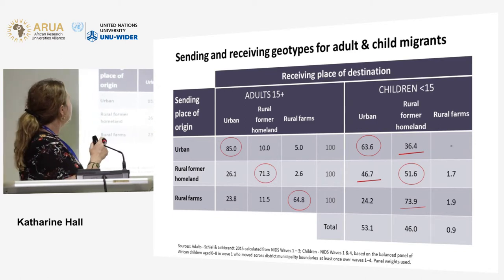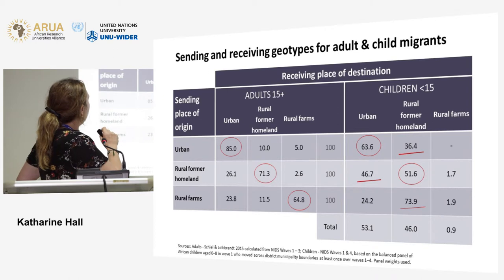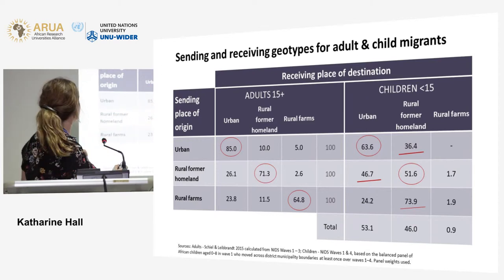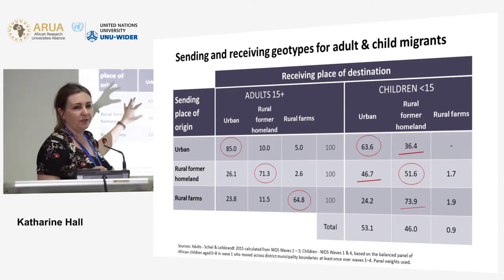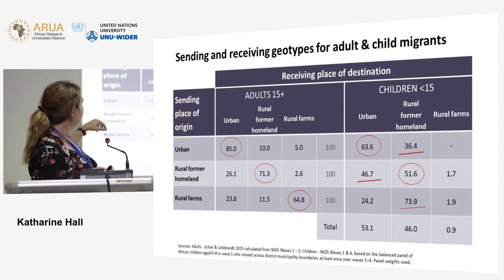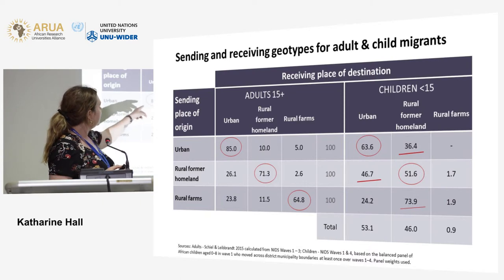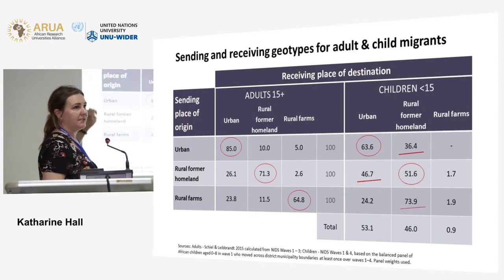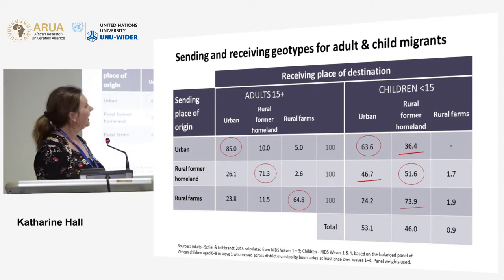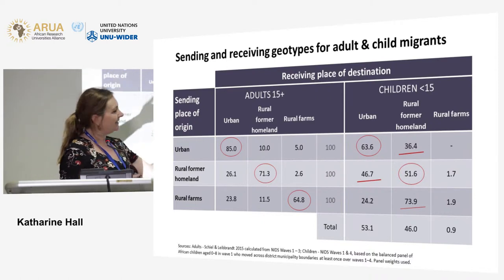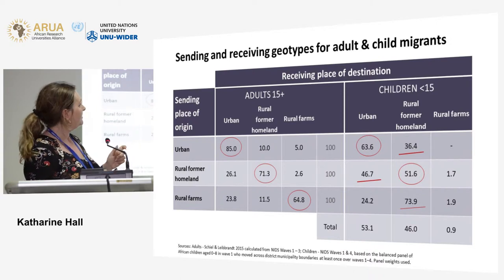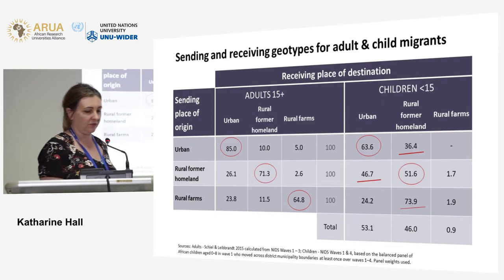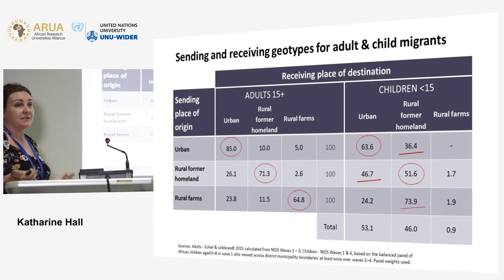Looking at where children are moving in the country: comparing to work on adults at UCT, the modal direction of movement is within area type — people moving to a different city or a different rural area, largely staying within those categories. For children, from the child panel analysis, there is similarly a modal direction within area type, but what's notable is a much more pronounced cross-area-type movement for children. Children's migration patterns differ from those of adults.